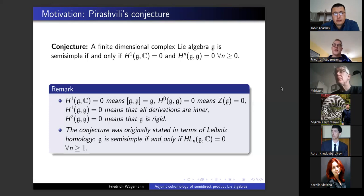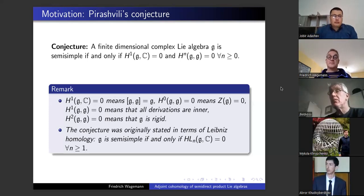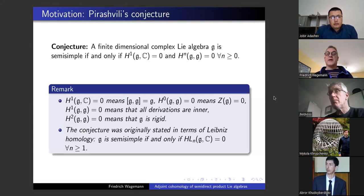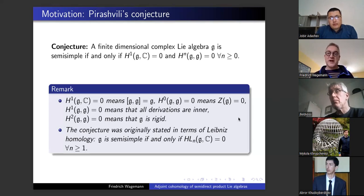The cohomological conditions mean: H1 with trivial coefficients being zero means that g equals its commutator sub-algebra; H0 with adjoint coefficient zero means the center is zero; H1 with adjoint means all derivations are inner; and H2 means g is algebraically rigid. This implies geometrically rigid but is not equivalent. Pirashvili's conjecture was originally stated in terms of Leibniz homology but boils down to this statement in ordinary Chevalley-Eilenberg homology.